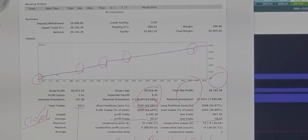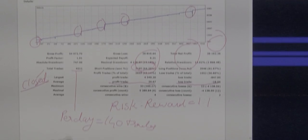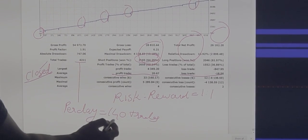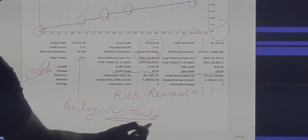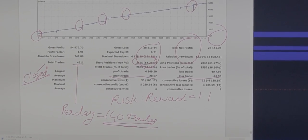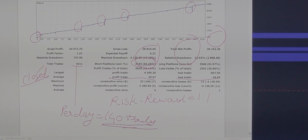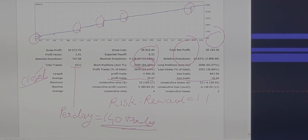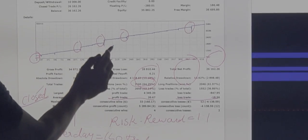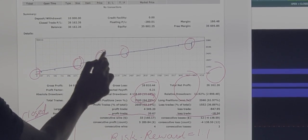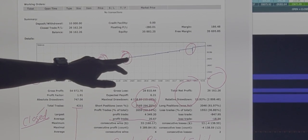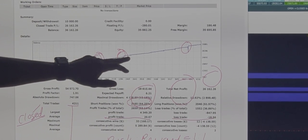We can see the total number of trades is 4,211 in 110 days, so the daily trade count is about 140 trades. Just imagine placing 140 trades — we are accumulating many charts and many pending orders. You can see from the chart that there are many points taken for the holding period, and these are called the drawdown.